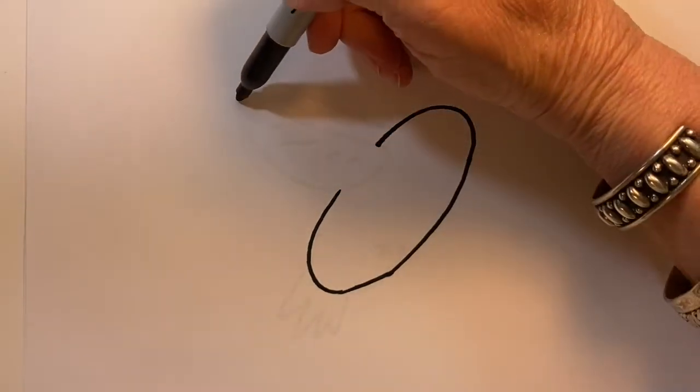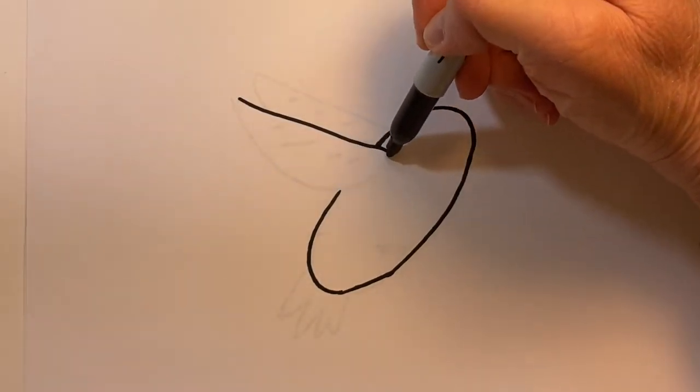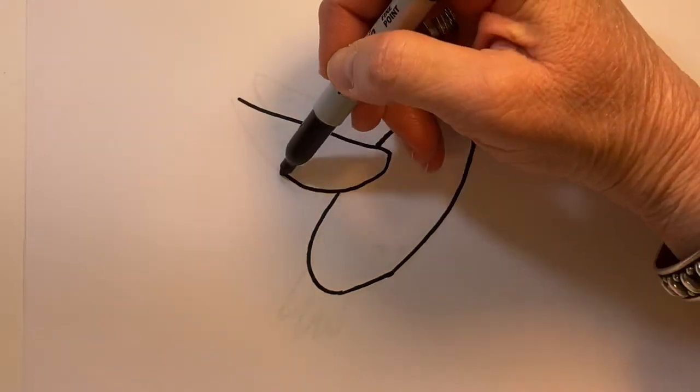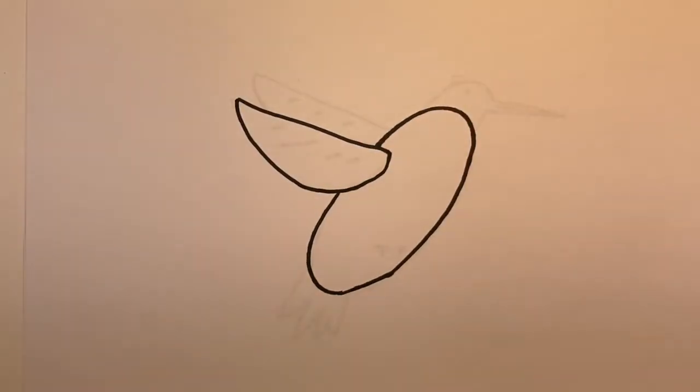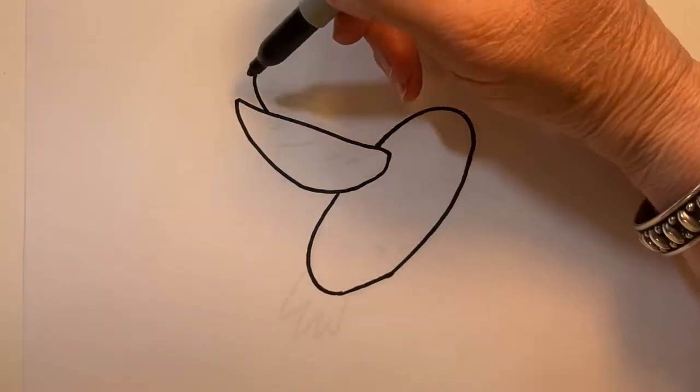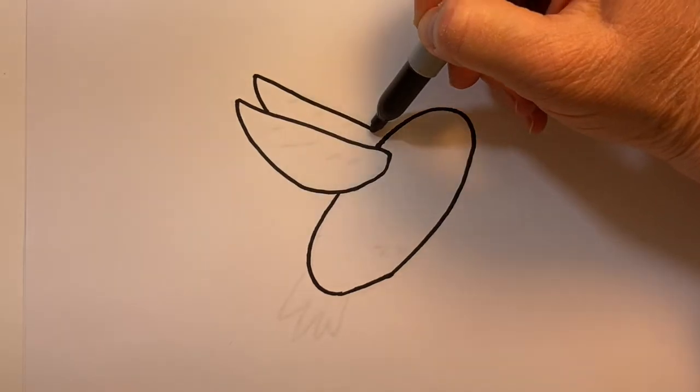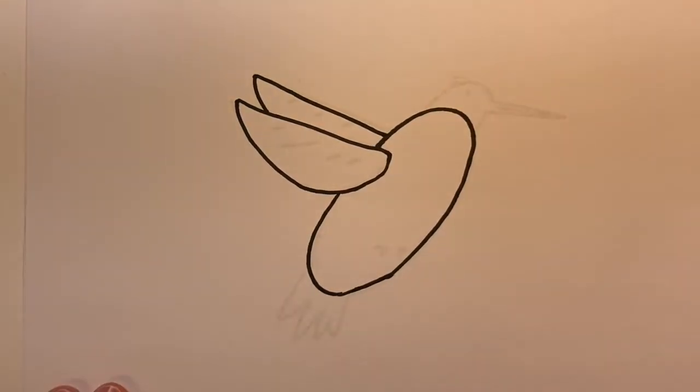So that now I can come in, create a wing, and create a second wing. We don't see all of the second wing because it's hiding behind that front wing.